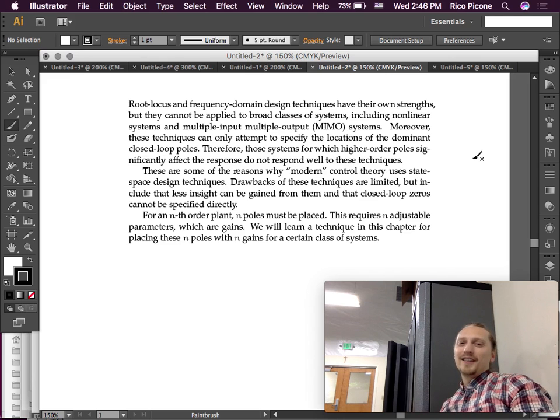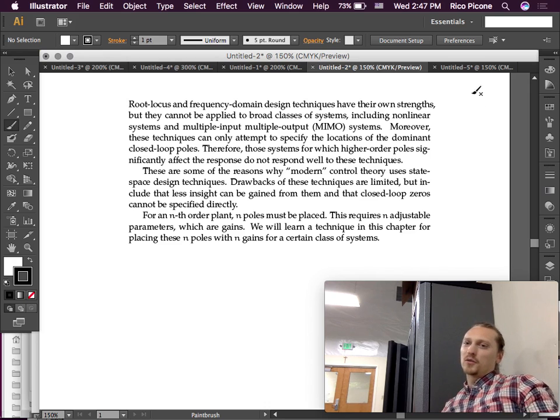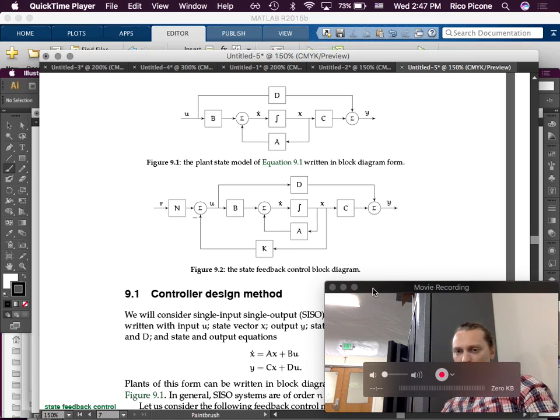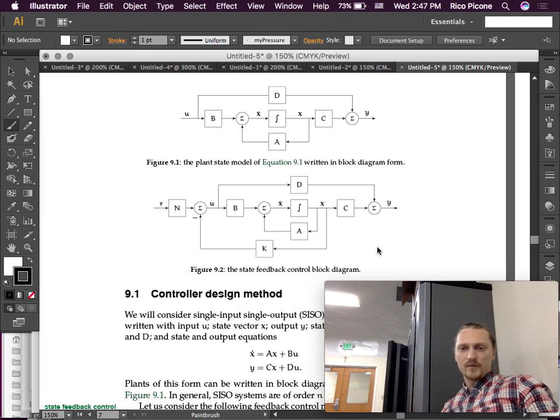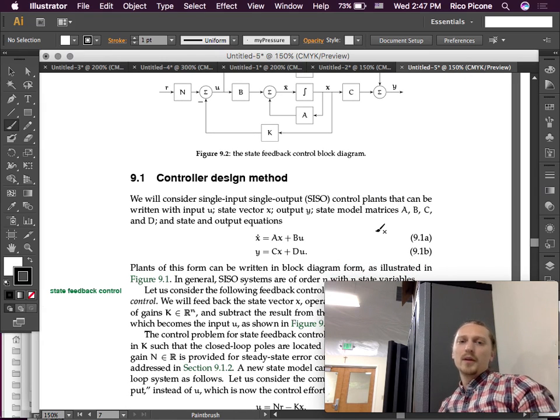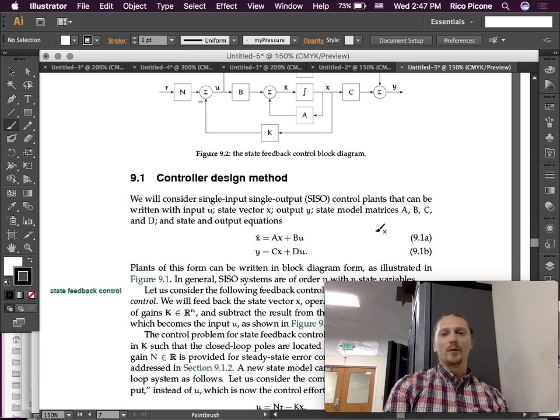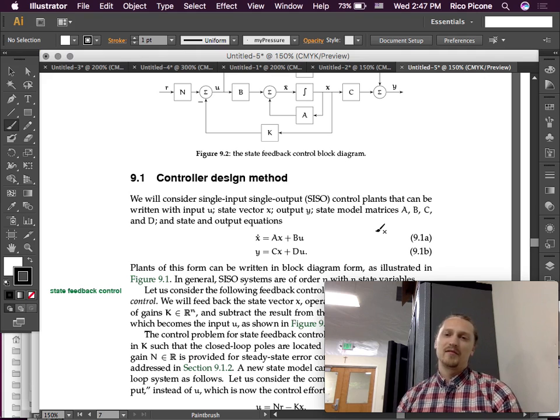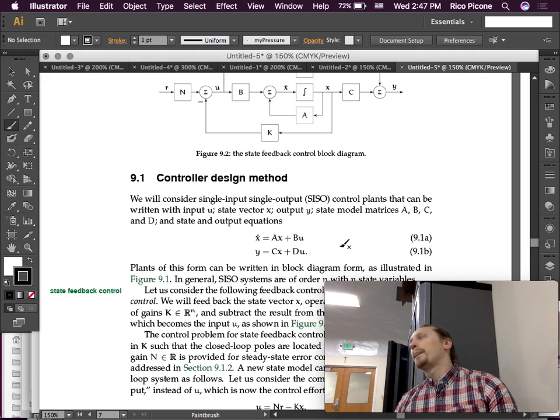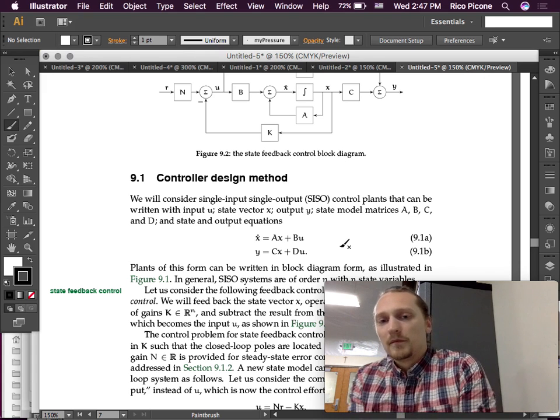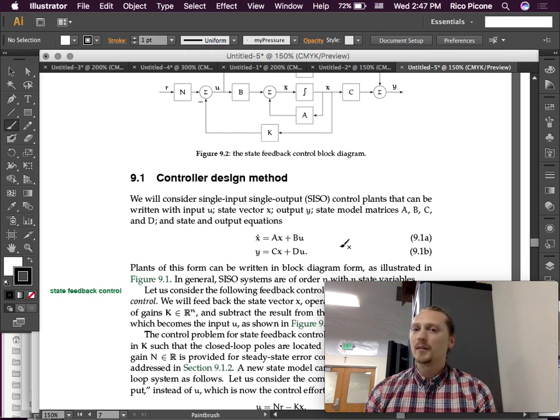We will consider single input, single output control plants. It can be written with input U, state vector X, output Y, state model matrices A, B, C, and D, and these are our state and output equations. Unfortunately, even this is single input, single output. It would be nice if our time would allow us to do multiple input, multiple output, but for now we're doing single input, single output, but we are doing a state-space model instead of a transfer function model.